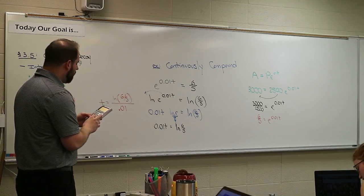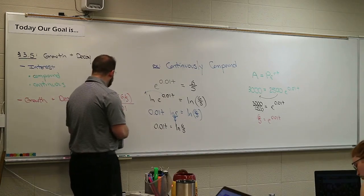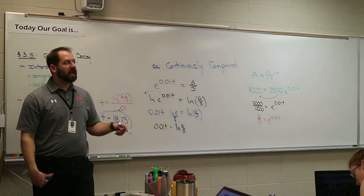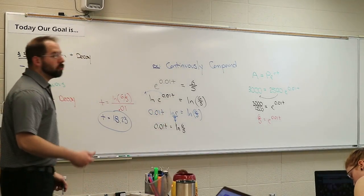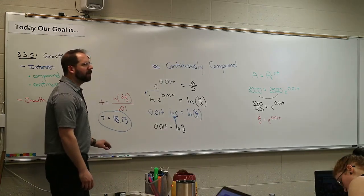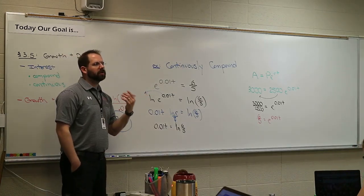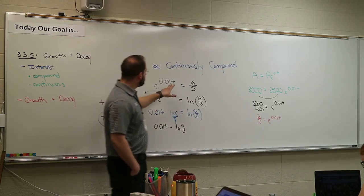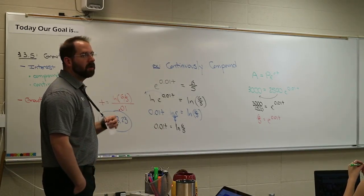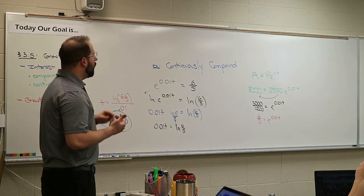That time is natural log 6 over 5 divided by .01. Make sure, on this problem, if you're ever typing a calculator, it is super important you use correct parentheses in the correct spots. To give you a time frame, this formula is used for years. Natural log 6 divided by 5, close that parentheses and divide by .01. And it tells me that this account can eventually grow there in 18.23 years.